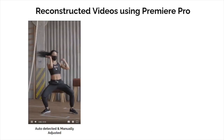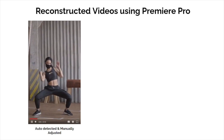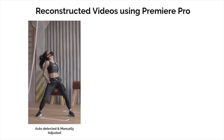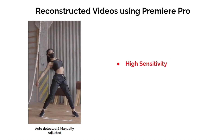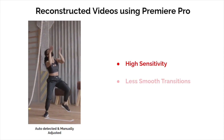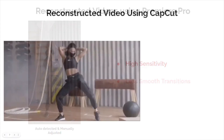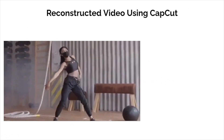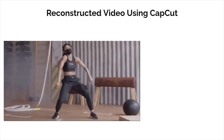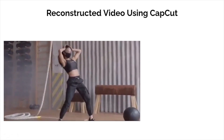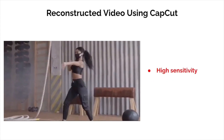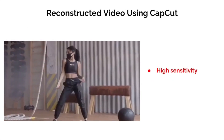Finally, we automatically detect the person and then manually adjust it frame by frame. The sensitivity is high, but transitions are not smooth. This video was reconstructed using CapCut, one of the most popular short video editing software. In this video, the sensitivity is high, but in some instances the complete dancer cannot be seen.